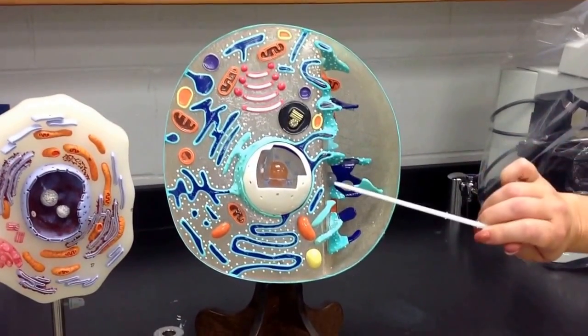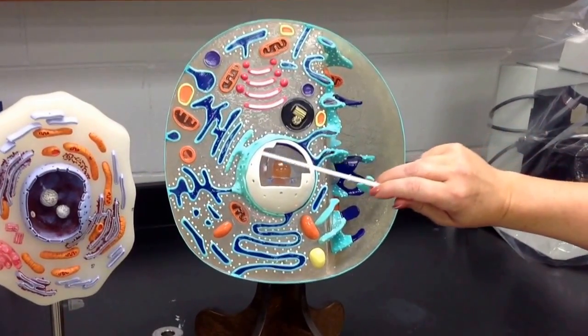So this is going to go through the different parts of the cell. We're going to start with the nucleus of the cell.